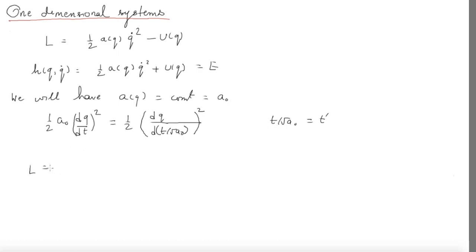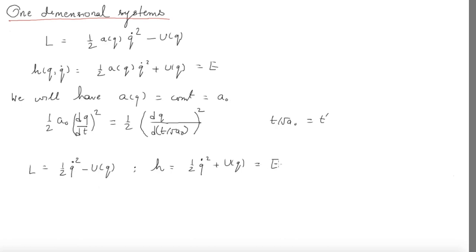Under this time scaling I can write the Lagrangian as L = ½q̇² − U(q). And now the Hamiltonian or energy function would be h = ½q̇² + U(q). We want to solve this system in general, and I do not need to set up the equations of motion using the full Lagrangian equations, because I can use this integral of motion and set up a first-order differential equation.